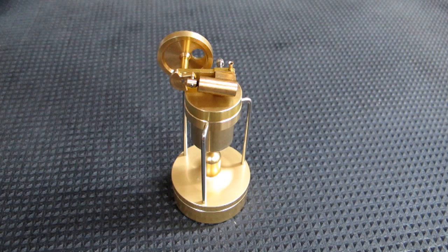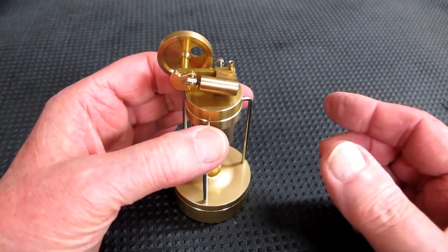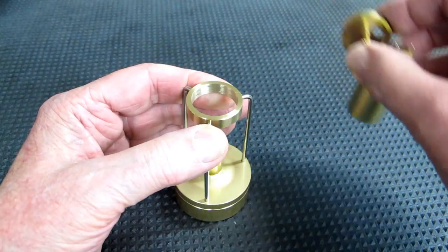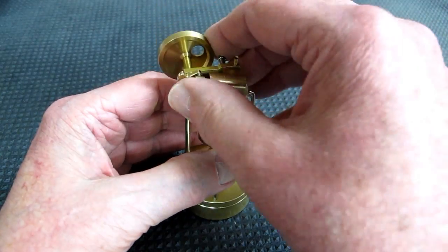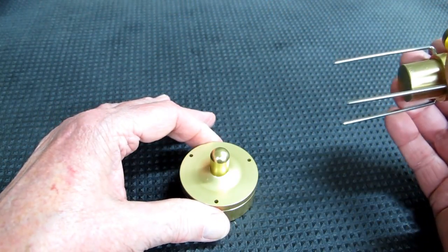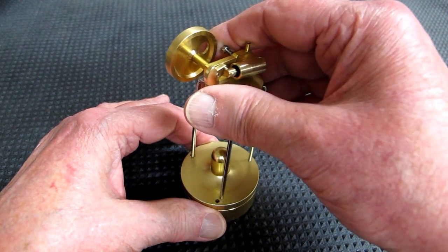When you get through running this and this whole thing has had a chance to cool off, you'll have to hold on to this tray and pick the steam engine up out of here. If you don't, then this whole thing comes out of the alcohol burner and you have to put all these pieces back in again.